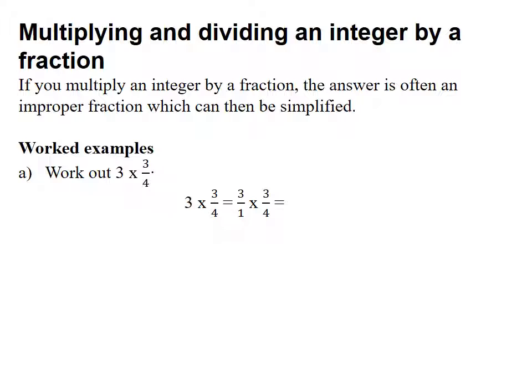So we just multiply the top two numbers. 3 times 3 is 9, 1 times 4 is 4, and we end up with an answer which is 9 over 4. 9 over 4 is a top-heavy fraction so we need to convert that to a mixed number. 9 divided by 4: 4 goes into 9 twice and there's one left over, so the answer is 2 and a quarter.